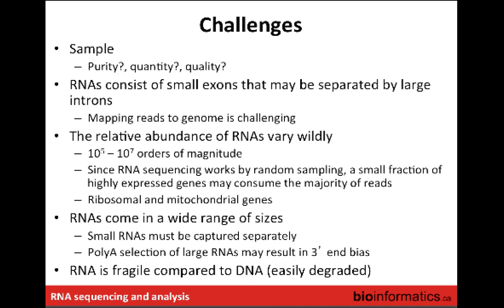RNAs also come in a wide range of sizes. Comparing to genomic DNA, all chromosomes are massive relative to the fragments being sequenced — megabases in length. But RNAs are expressed and functional at a much smaller and wider range of sizes — some RNAs are 20 bases long and others are 100 kb long. This can introduce bias: we have the potential to miss out on really small RNAs because of how we select library fragments, and there may be a tendency to over-represent larger RNAs in some senses.